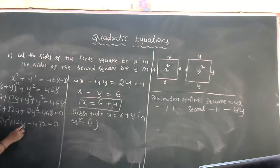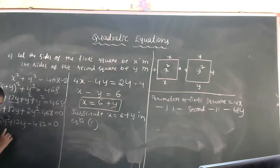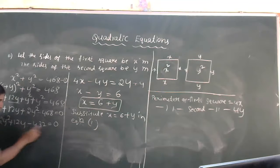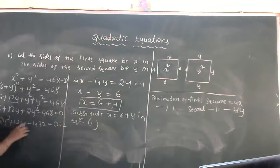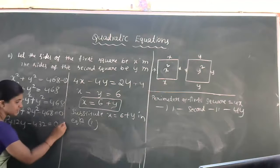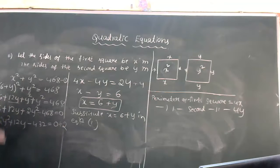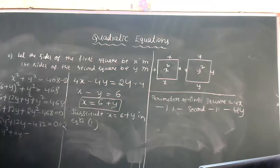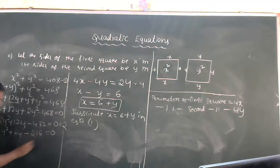We observe that 2 is a common factor. Dividing the entire equation by 2 simplifies it to y² + 6y − 216 = 0. This is now in the standard quadratic equation form ax² + bx + c = 0.